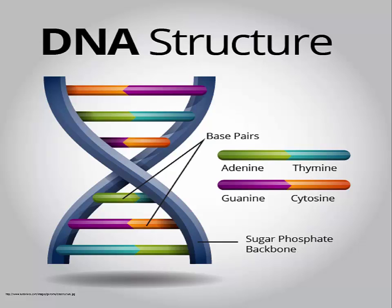Every somatic cell in a person's body has the same DNA. The information in the DNA is stored as a code made up of four nitrogenous bases: adenine, guanine, cytosine, and thymine. The DNA bases pair up with each other — adenine pairs with thymine, and cytosine pairs with guanine. They form units called base pairs.